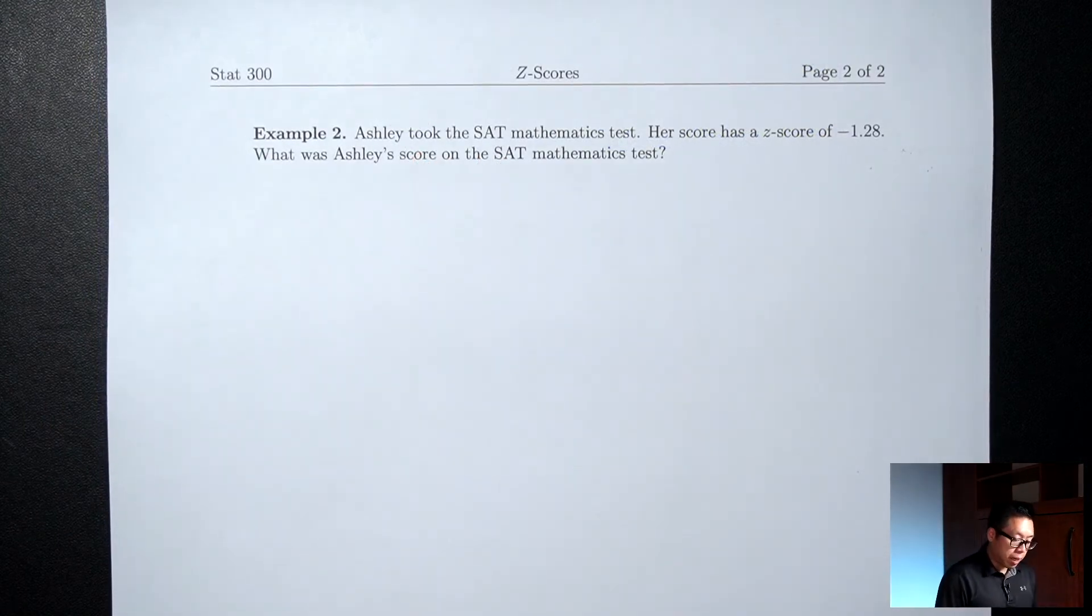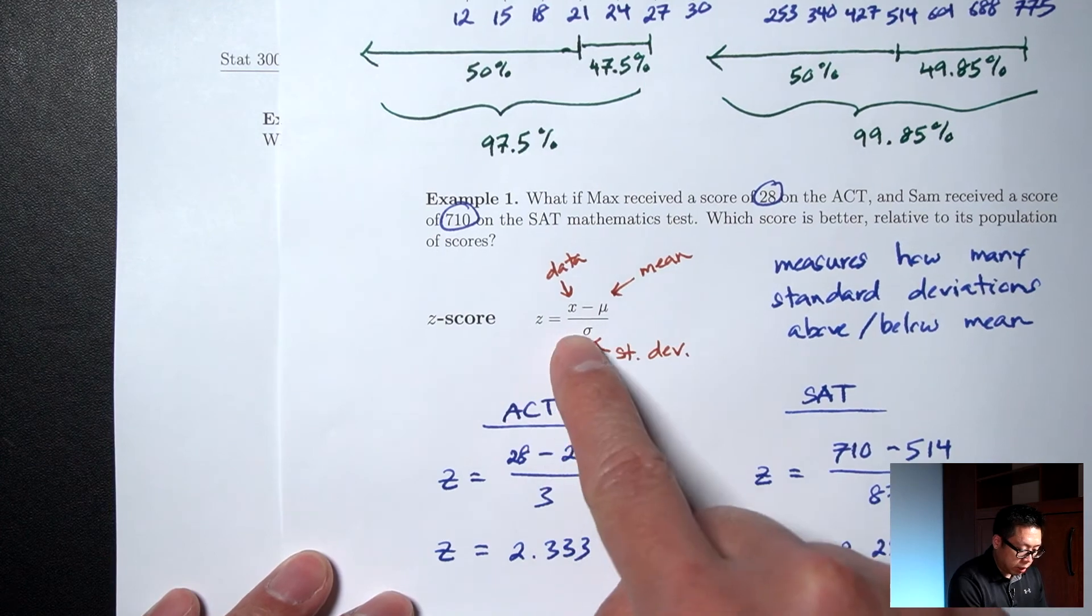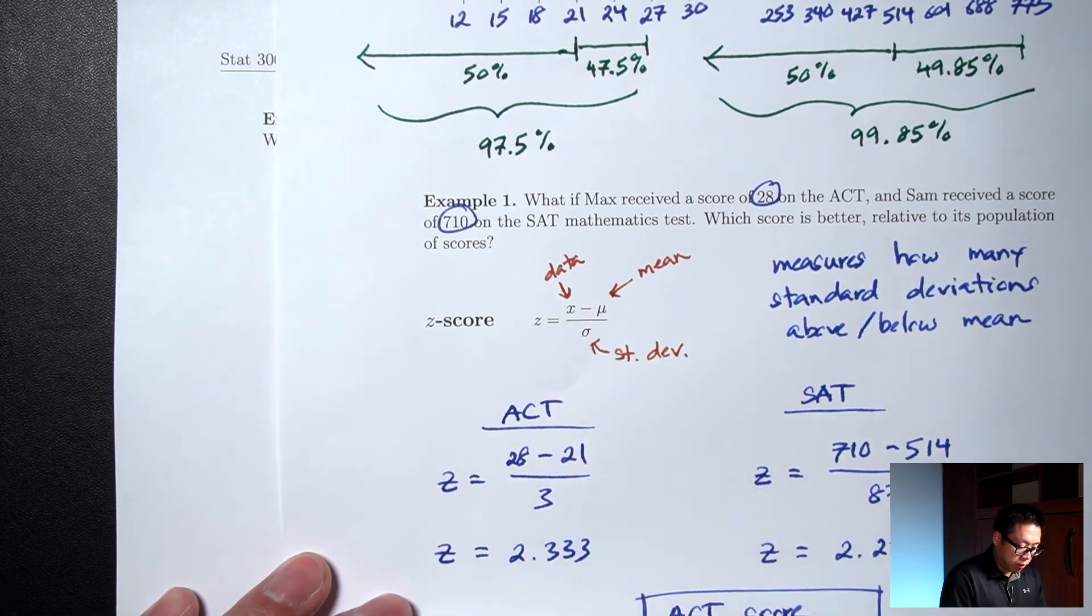Example 2. Ashley took the SAT math test. Her score has a z-score of negative 1.28. What was Ashley's score on the SAT math test? So we're going to use the z-score formula. Which was, let's recopy it, z equals x minus mu over sigma.